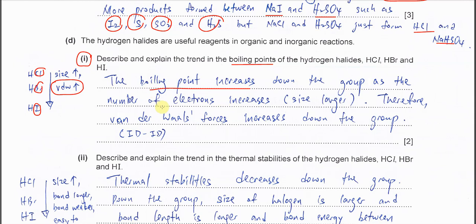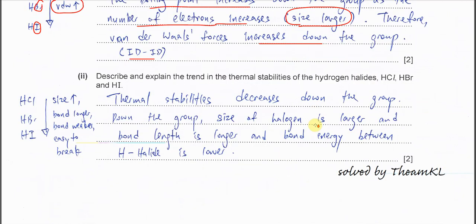Because the numbers of electrons increases, which means size becomes larger. When the size is larger, then the Van der Waals force, or you can actually say that IDID because it's just about the electrons number. So this Van der Waals force increases down the group.